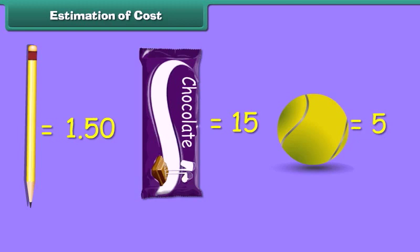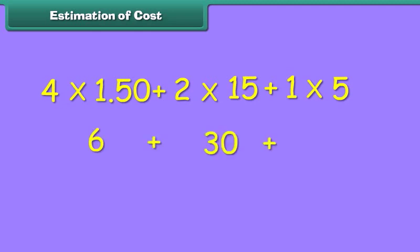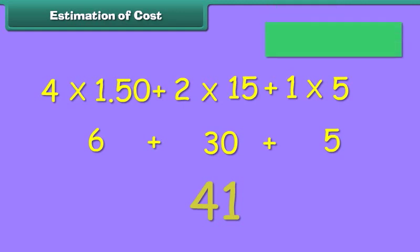Now, we calculate the total cost of these items. The total cost is equal to 4 × 1.50 plus 2 × 15 plus 1 × 5. This is equal to 6 plus 30 plus 5 rupees, which amounts to rupees 41. Thus, this is the estimated cost.